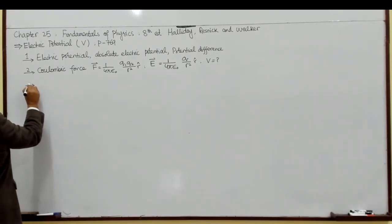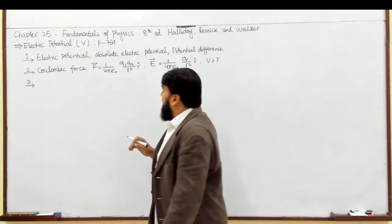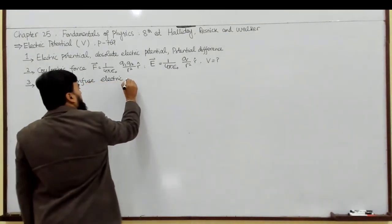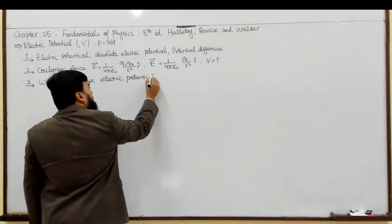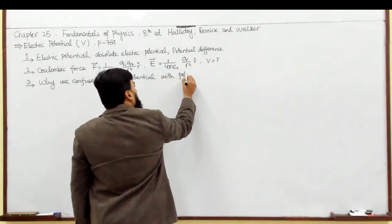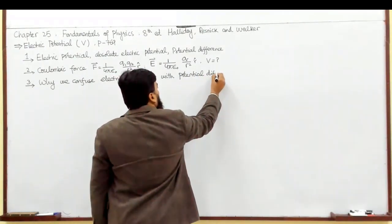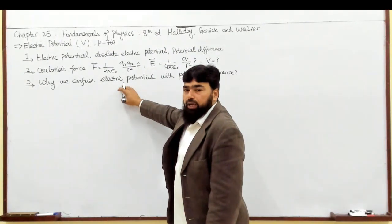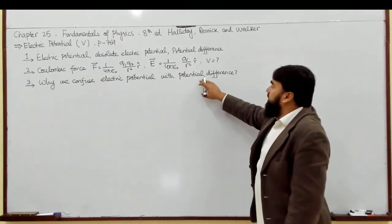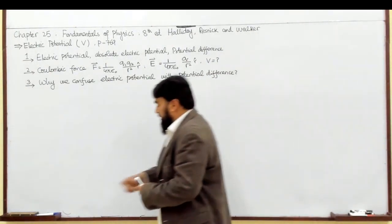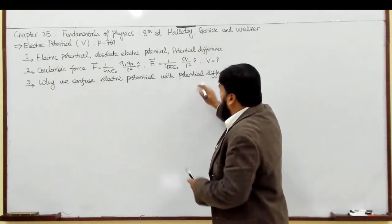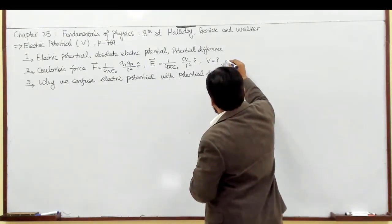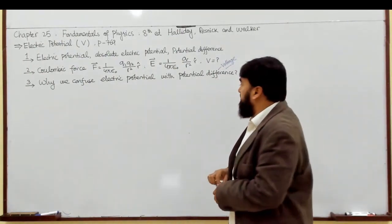تیسرا، ہم نے یہ understand کرنا ہے کہ ہم electric potential کو potential difference کے ساتھ confuse کیوں کرتے ہیں۔ Electric potential daily life میں ہم اتنا use نہیں کرتے جتنا ہم potential difference use کرتے ہیں، اور potential difference کو ہم daily life language میں voltage کہتے ہیں۔ تو ہم ان کو voltage کہتے ہیں جسے ہم V سے denote کرتے ہیں۔